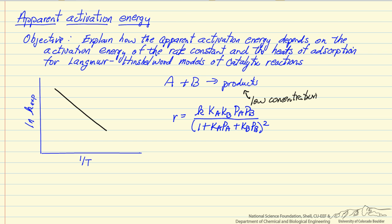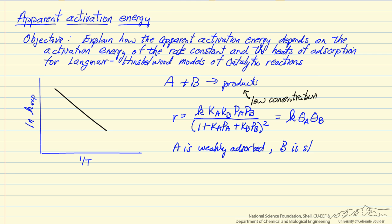Depending on which regime of coverage on the surface we're in — because this results from saying we have a rate constant times the fractional coverage of A and the fractional coverage of B — let's look at some limiting cases. We're going to assume that A is weakly adsorbed relative to B, meaning the coverage of A on the surface is low, and B is strongly adsorbed, so its coverage on the surface is high.